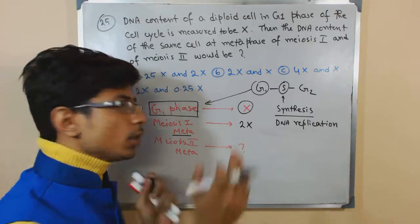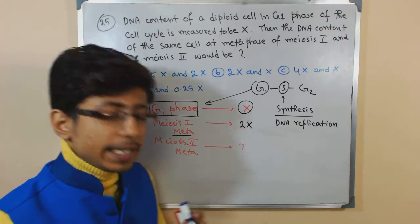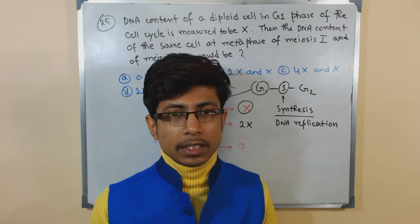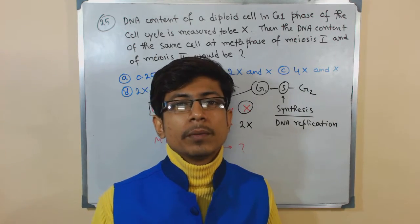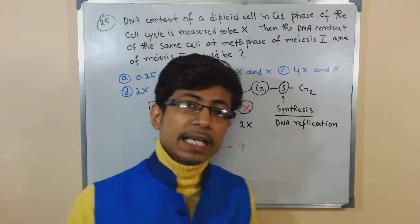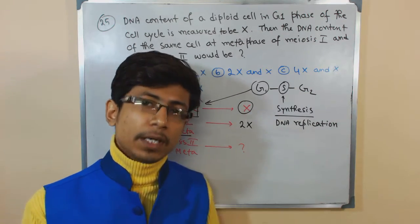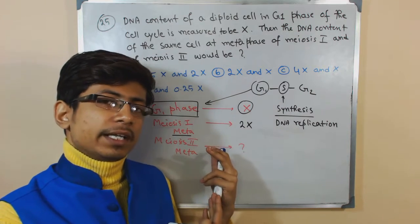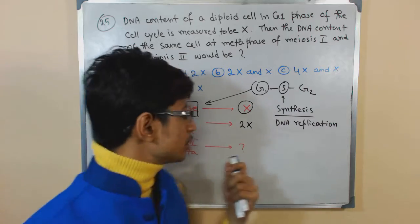Now if it is a mitosis, it will also be 2X because whatever number of chromosome you present in G1 phase, it will be doubled during entering into prophase, metaphase or whatever. Even before the prophase, the number of chromosome will be doubled because it will be duplicated in the S phase, which is just right next to G1 phase.